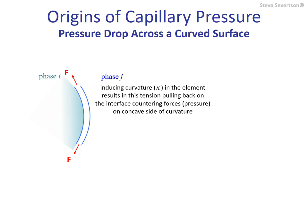We use the term curvature here, often indicated with kappa, to describe the extent to which a surface deviates from a plane. Higher curvature or higher kappa indicates greater deviation or a more sharply curved interface. It can be seen that as the element is curved, a portion of the tension force pulls the element back against phase I on the concave side of the curved surface. This results in a portion of the force from the surface tension acting over the projected area of the element to counter the hydrostatic pressure.